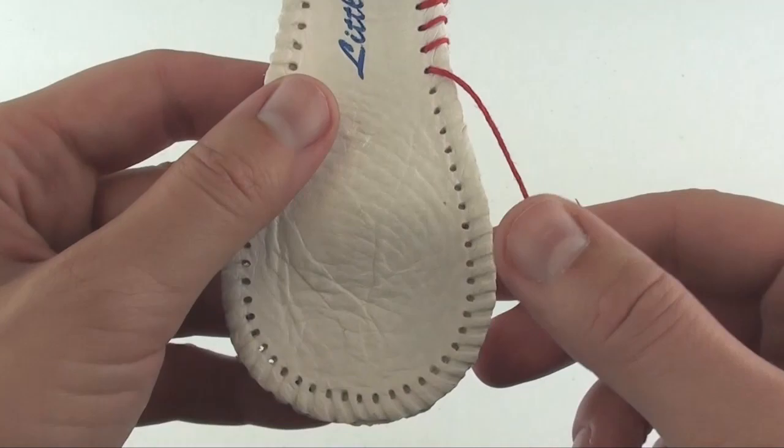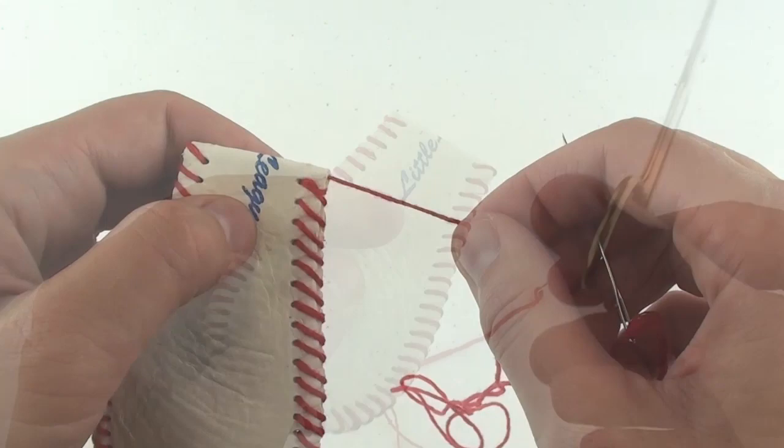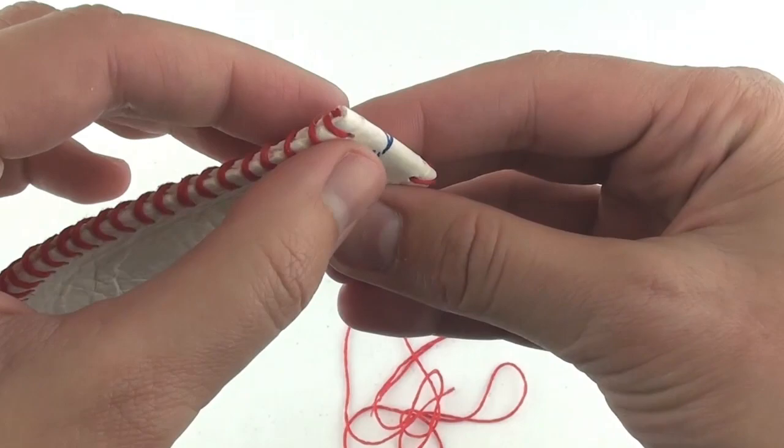With the last stitch, I like to enter the hole and then go through the middle section instead, and cut the end. The glue from the underside will hold this thread. However, it wouldn't hurt to put a tiny dab of E6000 glue right on this thread cut so that it holds better.